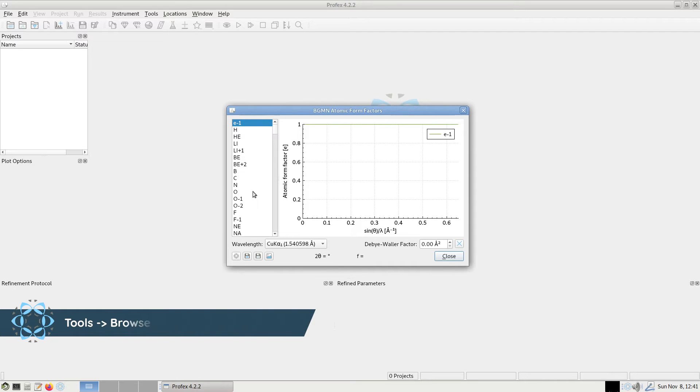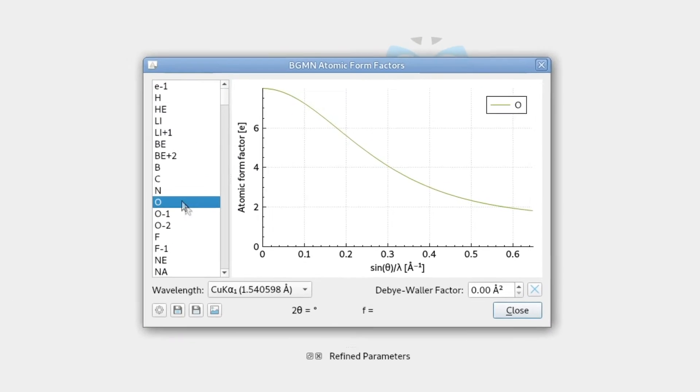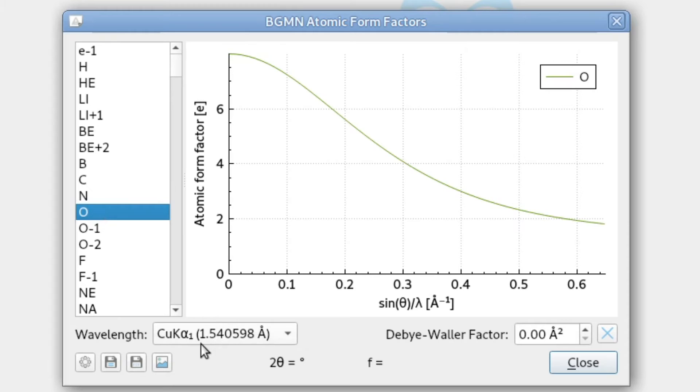So for example, if we select the oxygen atom, the neutral one, and we select our wavelength, let's use copper K alpha 1 radiation, we see the scattering power of oxygen as a function of the diffraction angle in a funny unit, sine theta divided by lambda.